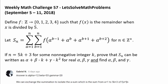Define function f from the set of integers to the set {0, 1, 2, 3, 4} such that f(x) is the remainder when x is divided by 5. Put another way, f(x) is giving us the value of x mod 5.